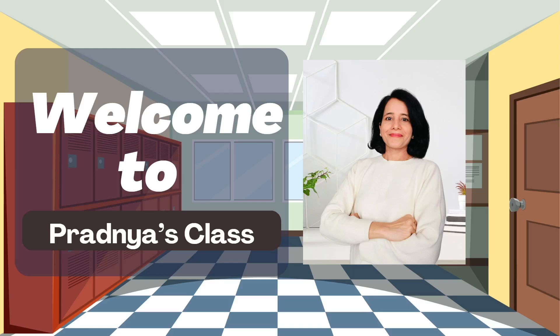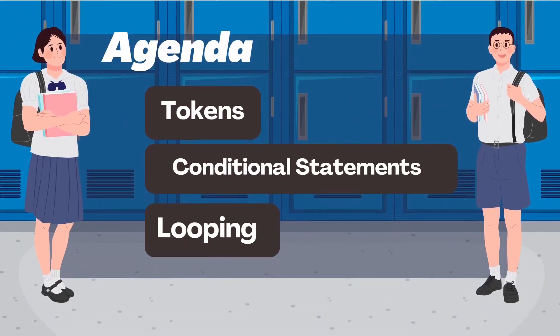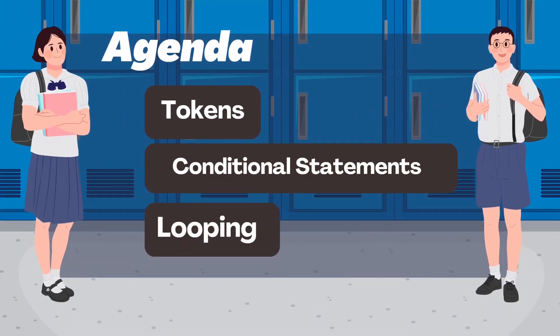Hey everyone, let's start the class 12 portion with a quick and solid revision of Python programming. Here is the plan: first we will quickly revise different types of tokens, then we will move on to conditional statements and how to use if-elif to control the flow of the program. Finally, we will revise looping statements like for and while loops that help us to repeat tasks efficiently.